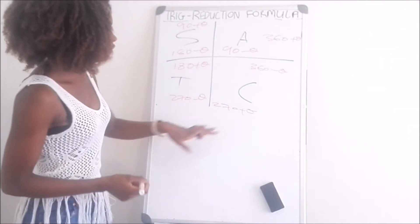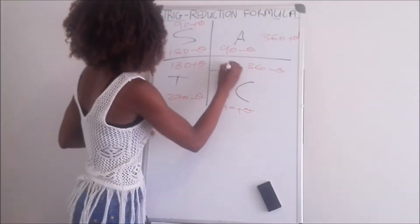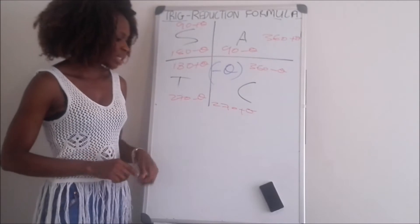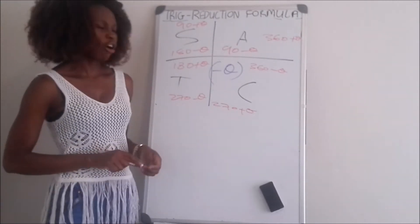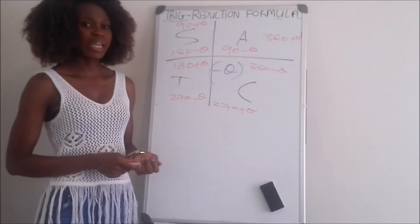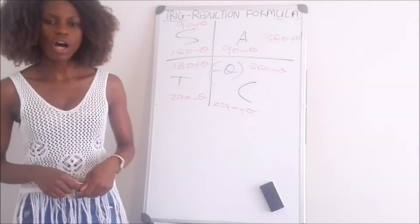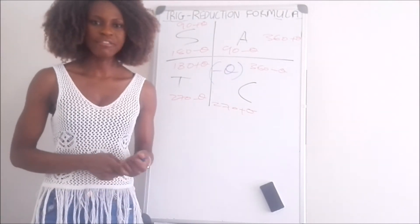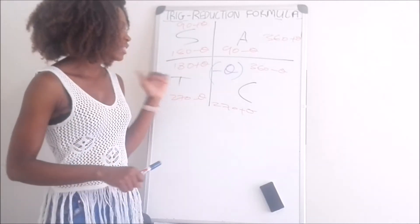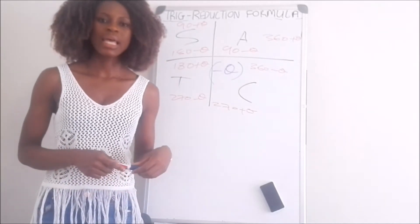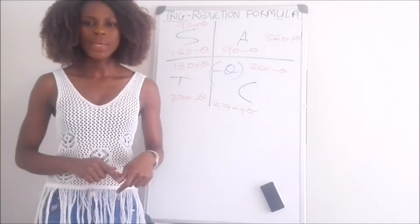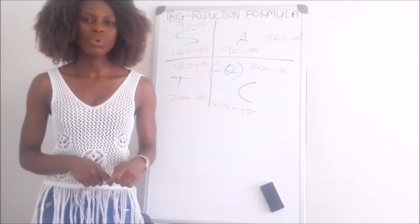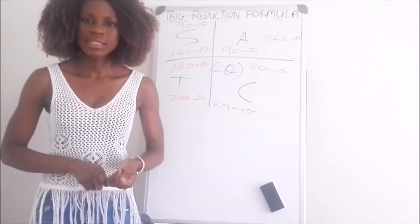In the fourth quadrant we have negative theta, of which cos is positive. So if we have sine of negative theta, the answer will be negative sine theta. If we have tan of negative theta, the answer will be negative tan theta. But if we have cos of negative theta, the answer will actually be positive cos theta.